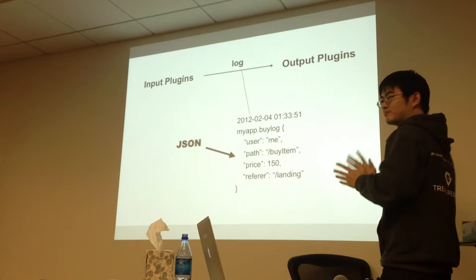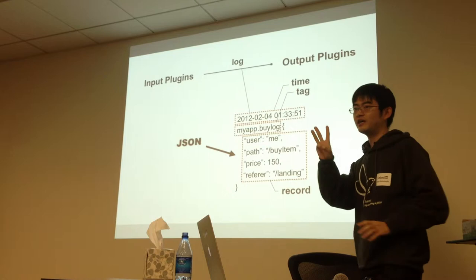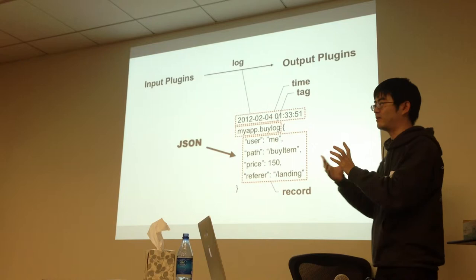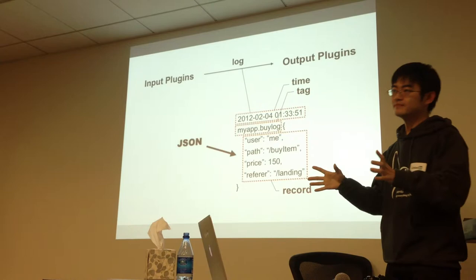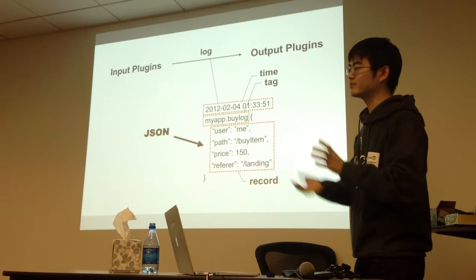Another key point is JSON. In Fluentd, a log consists of three elements. One is time, which means the time when the log is generated. Another is the tag — what is that log? The tag is actually used by the routing mechanism of Fluentd, so this tag goes to this store and that tag goes to another store.